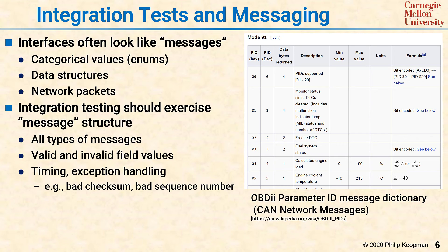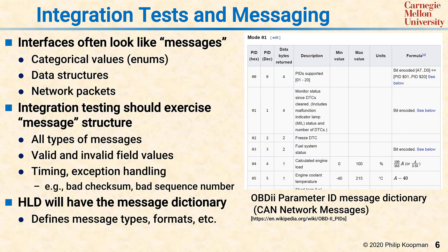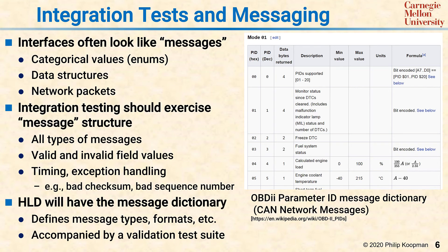What if there's a bad checksum indicating a message should be dropped? What if there's a bad sequence number on a sequence of messages, and so on. The HLD will have this message dictionary, which should define all the message types, formats, and so on, and give you a good basis for writing the integration tests based on the HLD. It's common to see components accompanied by a validation test suite so you can know that all the different types of messages are supported properly.